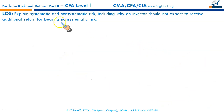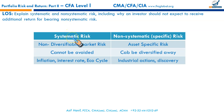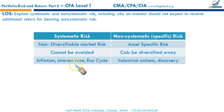The next LOS says: explain systematic and non-systematic risk, including why an investor should not expect to receive additional return for bearing non-systematic risk. Systematic risk is non-diversifiable market risk — it cannot be avoided. We cannot avoid inflation, interest rate risk, or the business/economic cycle. Every firm is affected by these risks, which is why it is called the risk of the system — systematic risk.